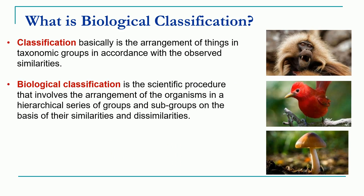As we have already studied in the last lecture, what is meant by classification and systematics, as well as the history of taxonomy and systematics. In general, classification means the arrangement of objects or things in different groups based on certain similarities. When we apply this term to biological classification, it is nothing but a proper scientific procedure which involves organizing organisms into different groups and subgroups based on certain similarities and differences.